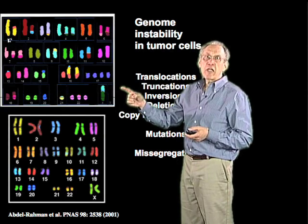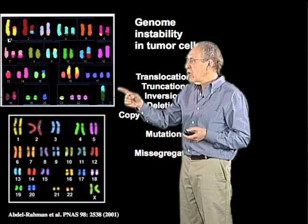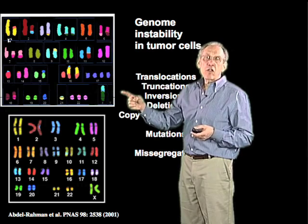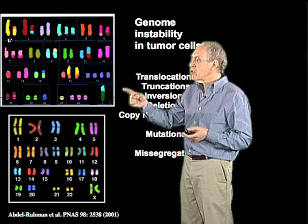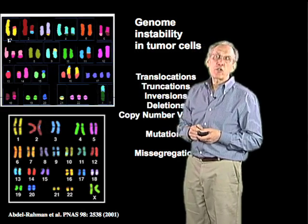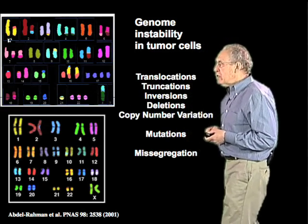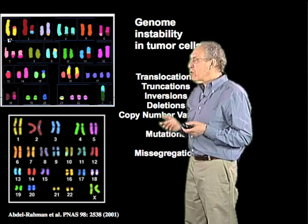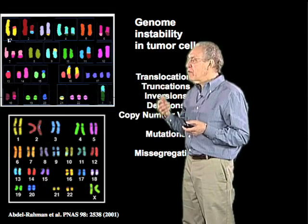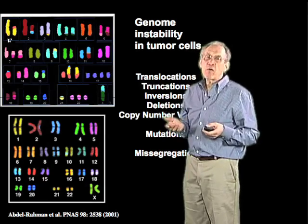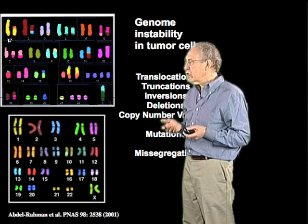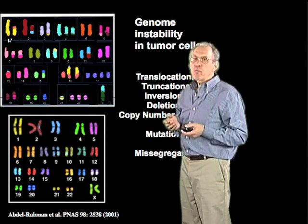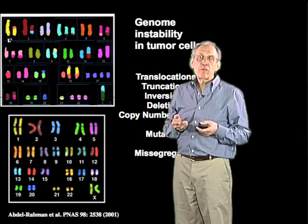There are translocations and inversions and deletions. There are truncations and, in fact, lots of other alterations which at this level of analysis you can't see, such as individual mutations. And one of the things that we would like to understand is why cells that have this kind of instability have emerged from the background of normal human cells. Some of these translocations turn out to be very important in terms of the origins of cancer themselves.